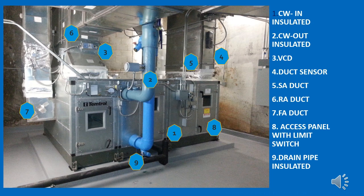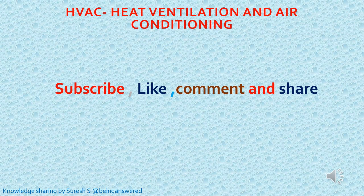You can see the side view of the AHU with chilled water pipe in and out, and ducting for fresh air, exhaust, supply air, and return air connected. Chilled water in and chilled water out are insulated pipes. A volume control damper is used to maintain the volume of air going to the conditioned area. A duct sensor is used on the supply air duct and return air duct, and there is a fresh air duct. An access panel with a limit switch will be present, and the drain pipe is insulated.